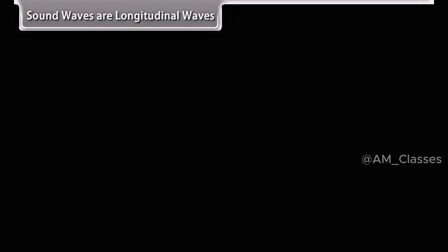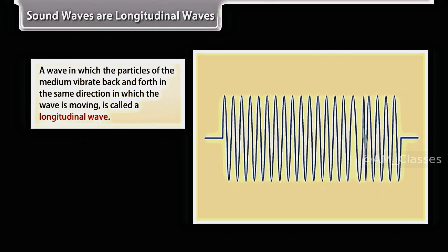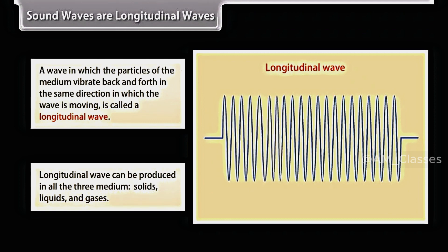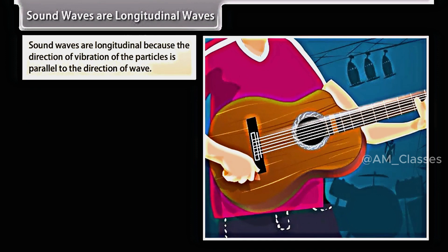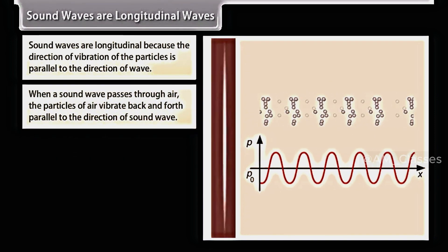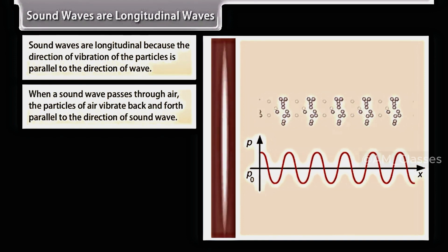Sound waves are longitudinal waves. A wave in which the particles of the medium vibrate back and forth in the same direction in which the wave is moving is called a longitudinal wave. Longitudinal waves can be produced in all the three mediums: solids, liquids, and gases. Sound waves are longitudinal because the direction of vibration of the particles is parallel to the direction of wave. When a sound wave passes through air, the particles of air vibrate back and forth parallel to the direction of sound wave.